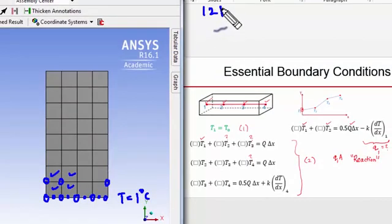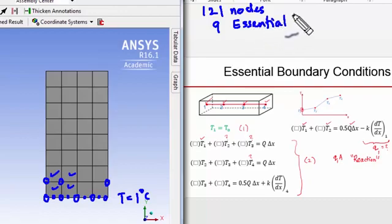We have 121 nodes in total. Nine temperature values will be determined from the essential boundary condition, and then there are the remaining 112 which are determined by inverting a 112 by 112 matrix. That's a sparse matrix.